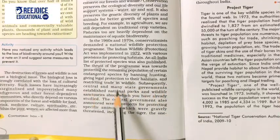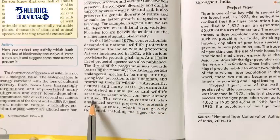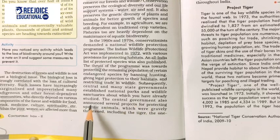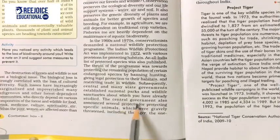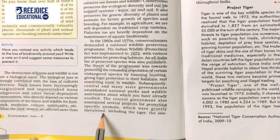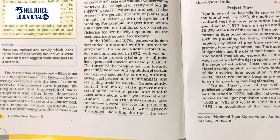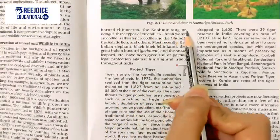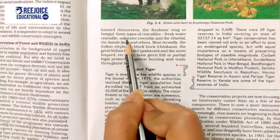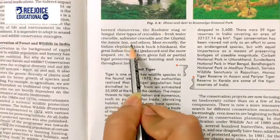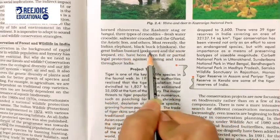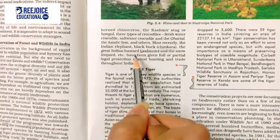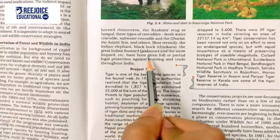Subsequently, central and many state governments established national parks and wildlife sanctuaries. The central government also announced several projects for protecting specific animals which were gravely threatened, including the tiger, the one-horned rhinoceros, the Kashmir stag (hangul), three types of crocodiles (freshwater, saltwater, and gharial), the Asiatic lion, the Indian elephant, black buck (chinkara), the great Indian bustard (godown), and the snow leopard, among others — all given full or partial legal protection against hunting and trade.